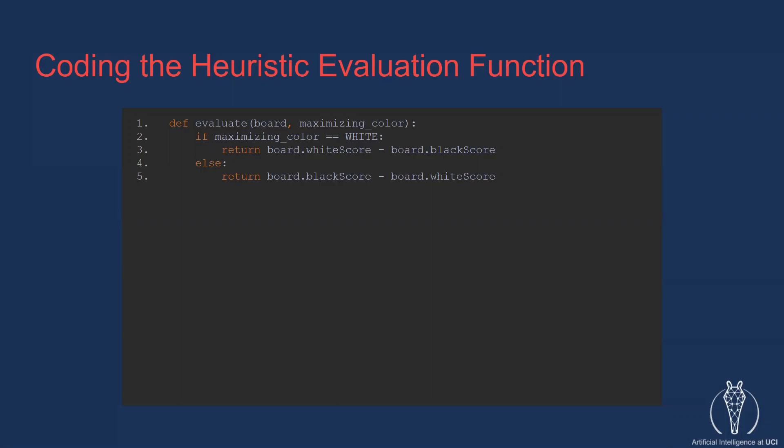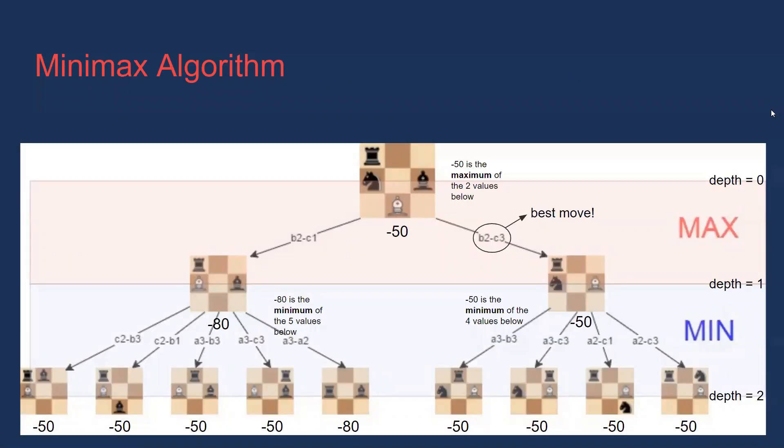Now it's time to talk about the brains behind our AI, the minimax algorithm. Consider the game state shown at the top middle of the screen. It is white's turn, and white is the maximizing player. White has two moves available to them. They can move their bishop up and to the left or up and to the right.